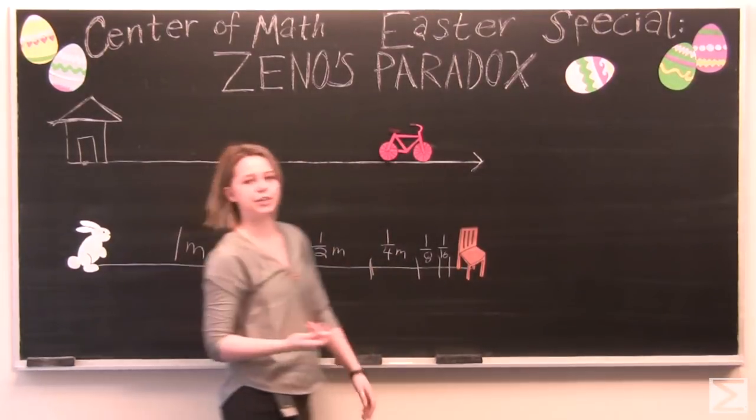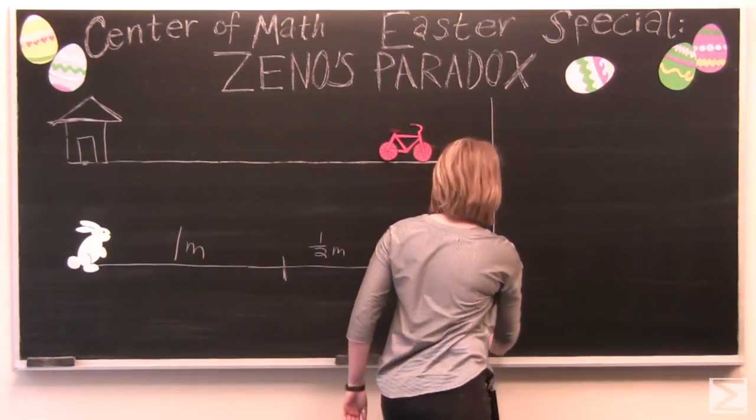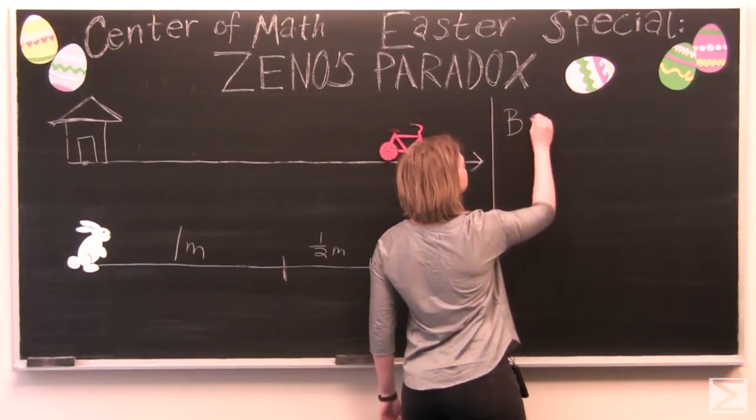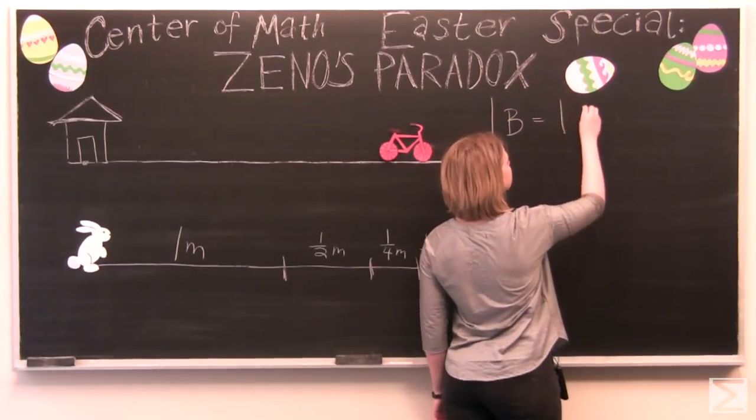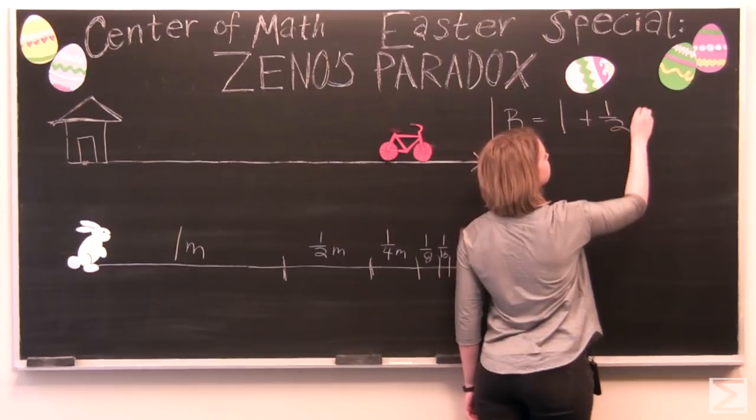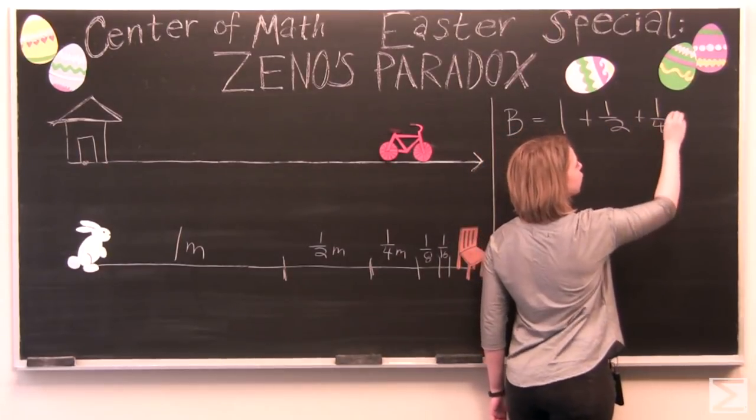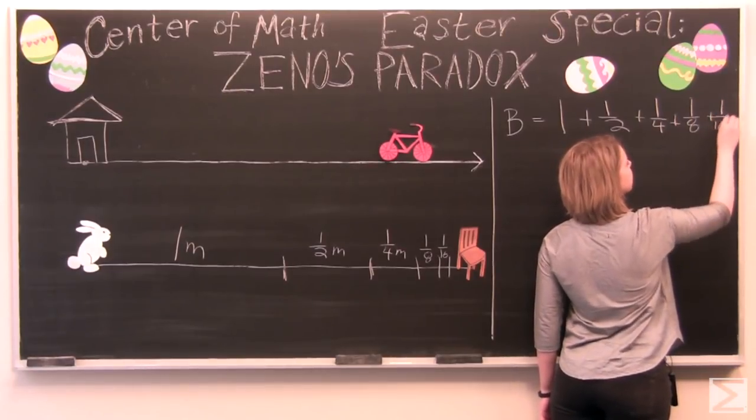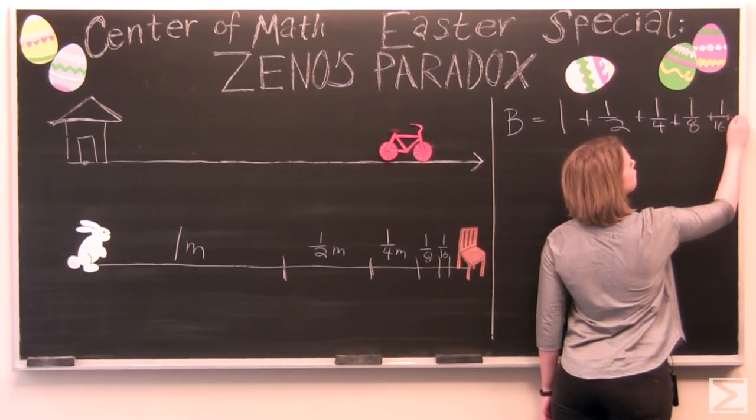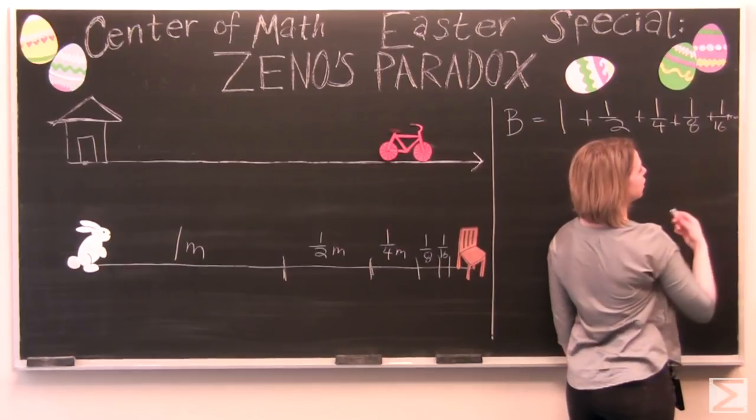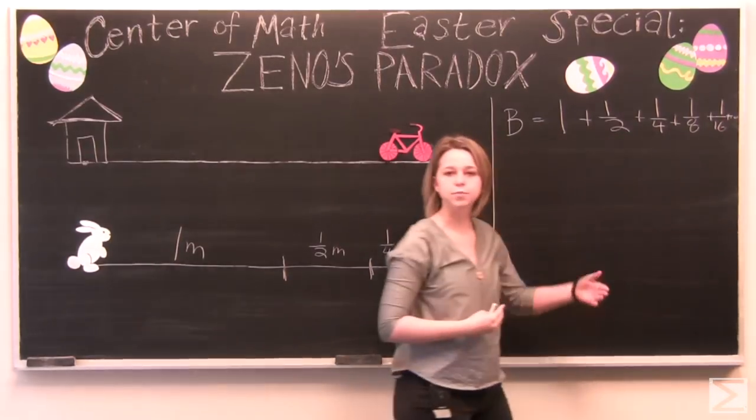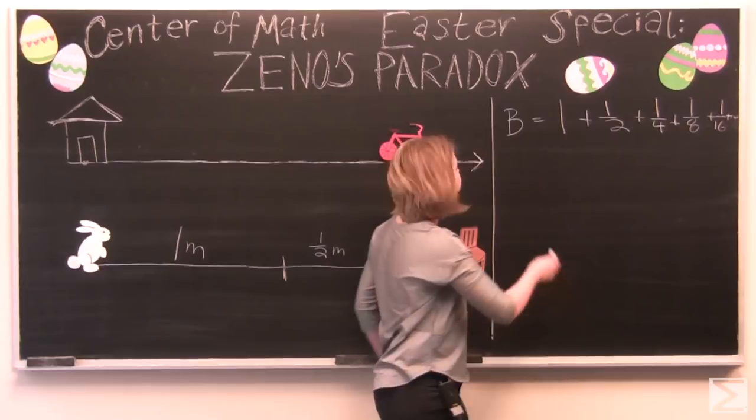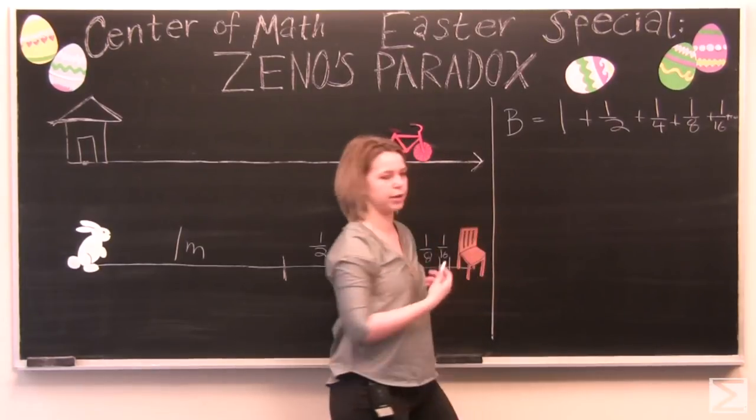So let's explain this using a couple of equations. So our bunny is traveling one meter plus one half meter plus one quarter meter plus one eighth meter plus one sixteenth. And it got a little squished but there's an ellipse on the end there to show that the equation goes on and on forever. And so let's divide this equation in half.